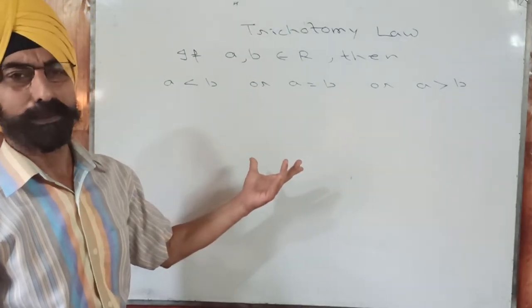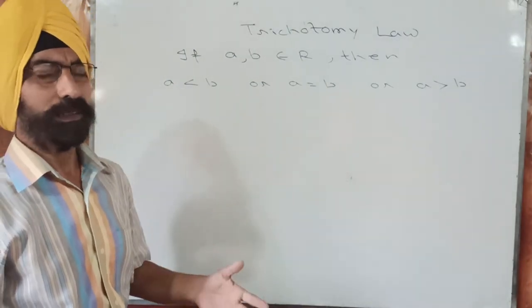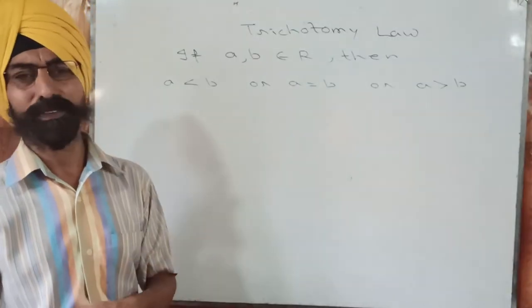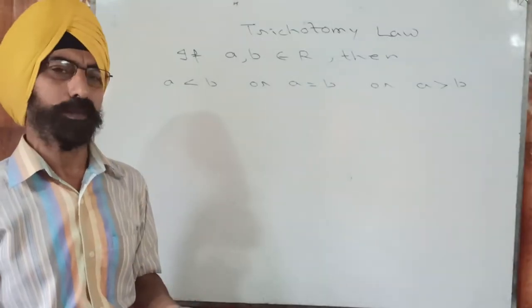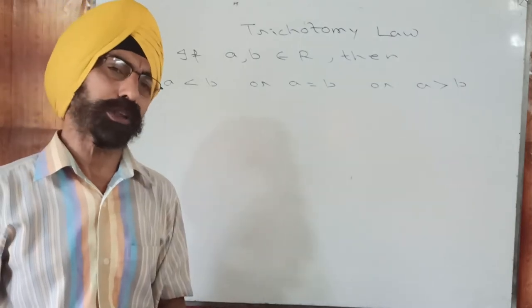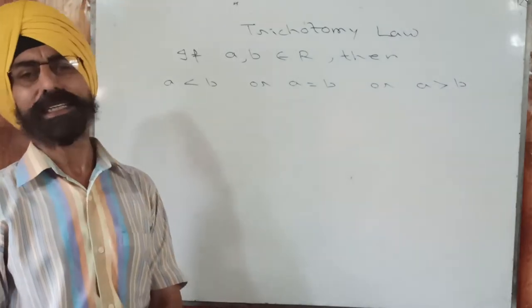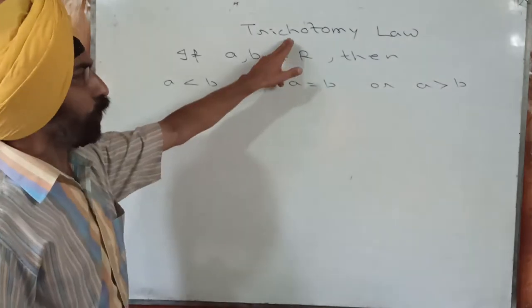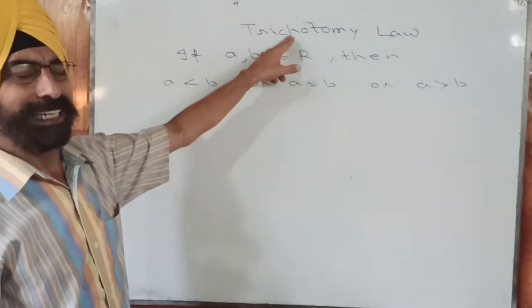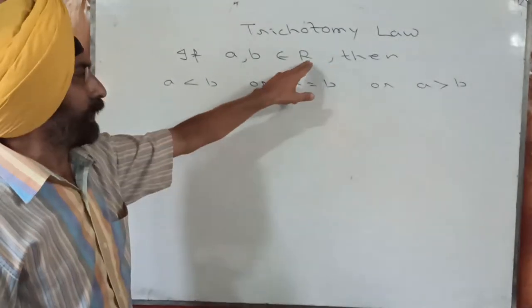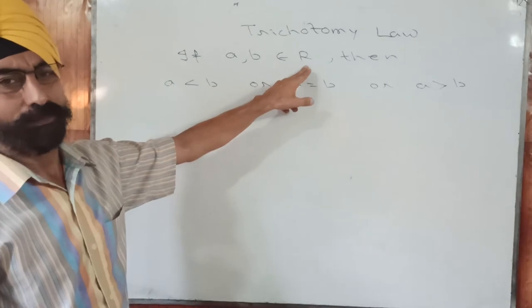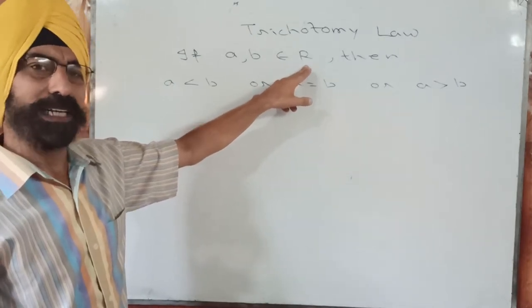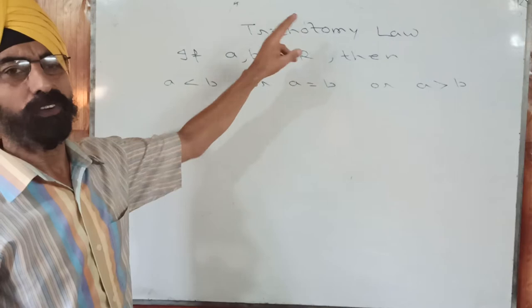When you think of this law you might think it is obvious — we know that for two real numbers either one is less, they are equal, or one is greater. There is no fourth possibility. But trichotomy law is restricted to the set of real numbers only. That means if you go beyond real numbers, trichotomy law fails.